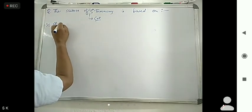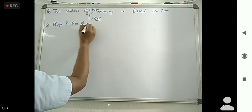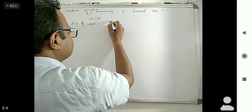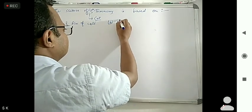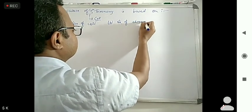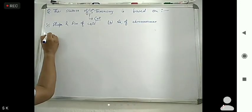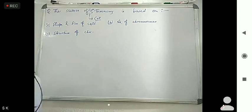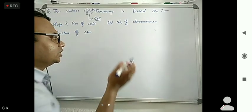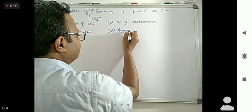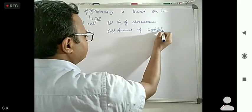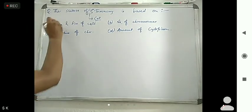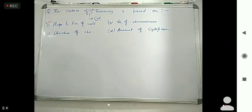The options are: first, shape and size of cell; second, number of chromosomes; third, structure of chromosome; and fourth, amount of cytoplasm. The answer here is shape and size of the cell — that is what cytotaxonomy correlates with and is based on.